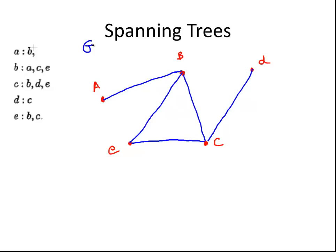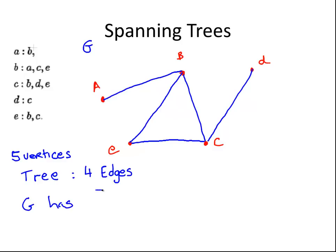What we're going to do now is consider the spanning tree. We'll look at each vertex — there are five vertices. We'll see which edges we can remove to form a tree. There are five vertices, so the tree must have four edges. This graph G has five edges, so we can remove one of the edges to form a spanning tree.